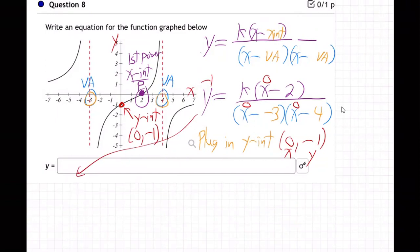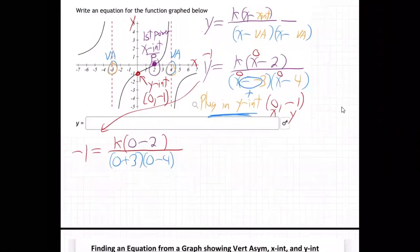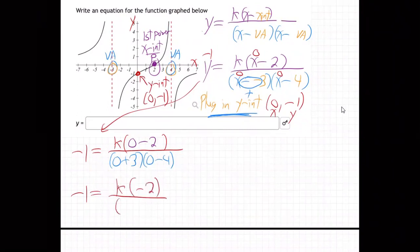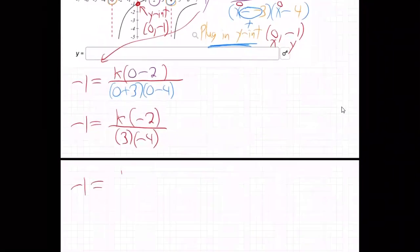So bring it over here. And what do we have? Negative one equals fraction k. And on the top we have, oh not x, and now we've plugged in zero. Zero minus two. And on the bottom, zero plus three, the double negative here as you know is positive, and zero minus four. So we plugged in the y-intercept to find k. Again, so what do we get when we do that? Minus one equals k times minus two over three times minus four. So that's minus one equals k is minus two over minus 12.